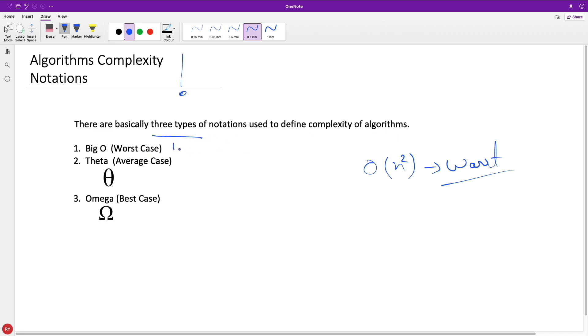First is Big O notation. If you have any idea about algorithm complexity, you must know what Big O notation is. If someone asks for average time complexity, you use Theta notation. And if someone asks for the best case, you use Omega notation with whatever the complexity is.